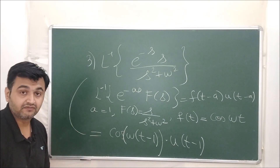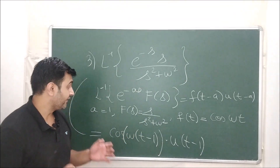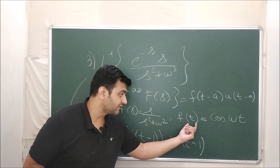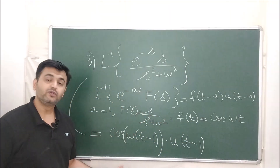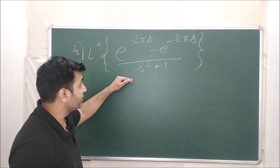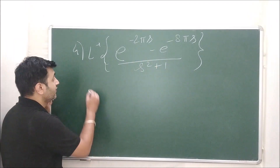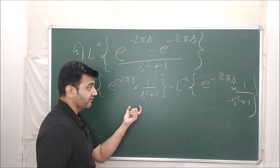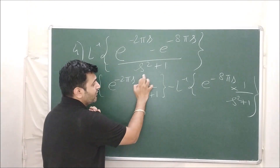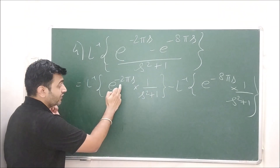For the second shifting theorem you identify a, then find the function whose Laplace is F(s), and then you're done. Let's take one more example: find the Laplace inverse of the given quantity. You have (s² + 1) in the denominator with two exponential terms, so separate them. Since Laplace inverse is linear, you get two terms. Always write your exponential separately so you can identify F(s) clearly.